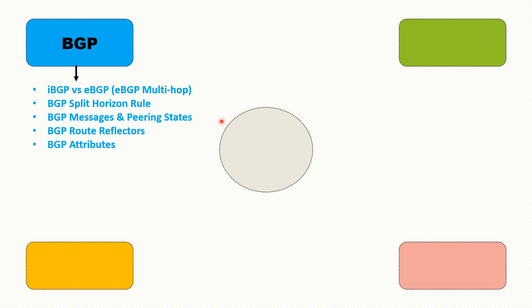BGP route reflectors are a very common interview question — why are route reflectors needed in the core, what functionality do they provide, and what is the alternate option. The alternate option is BGP confederations, but most service providers run route reflectors rather than confederations, so this is something you should definitely prepare for.